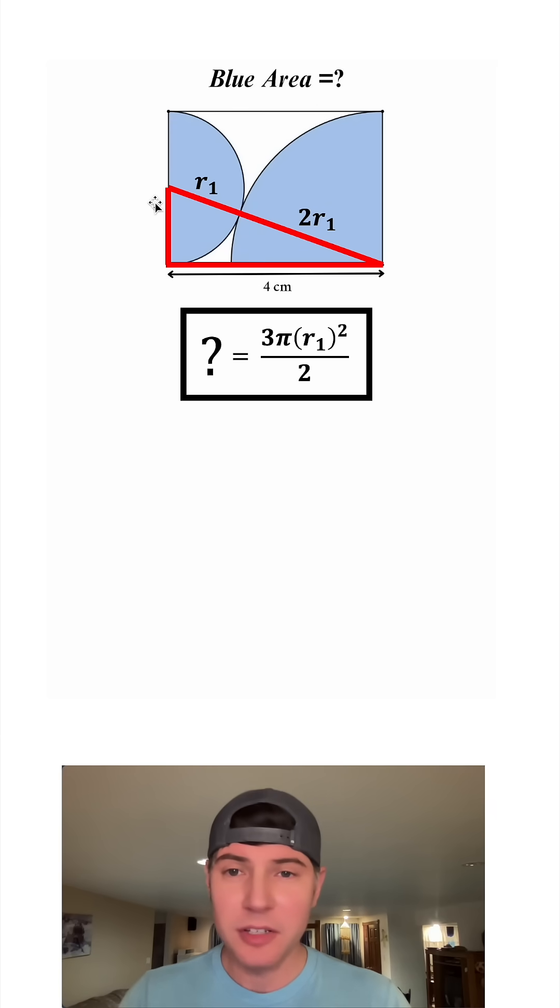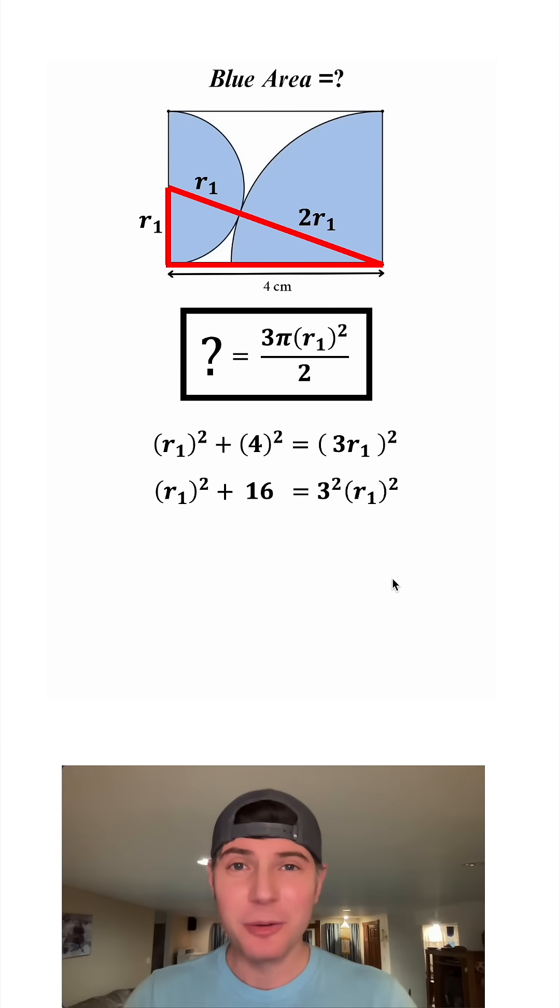We also know this is r sub 1, so we can use the Pythagorean theorem. We have r sub 1 squared plus 4 squared equals 3r sub 1 squared. This 4 squared equals 16. And this square goes to both the 3 and the r sub 1, so it becomes 3 squared r sub 1 squared, and 3 squared equals 9.